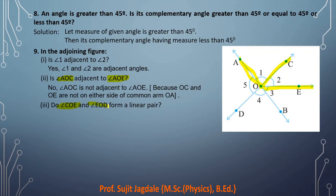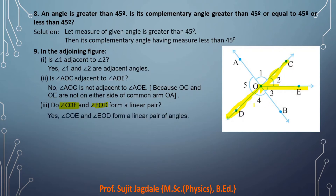Do angle COE and angle EOD form a linear pair? These are adjacent angles, and if we consider the non-common arms OC and OD, they are directed oppositely — opposite to each other. This is the property for a linear pair. So yes, these two angles form a linear pair because their non-common arms are opposite to each other.